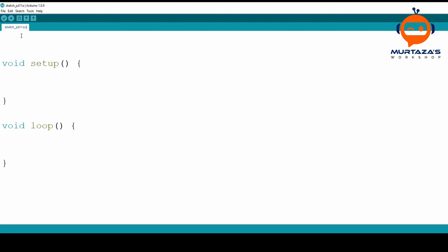The first thing we have to do is write down our pin numbers that we have connected our motor module to. Normally you can write, for example, an enable pin, input one, input two for the direction. You can write it like: integer enableA equals pin number 13.